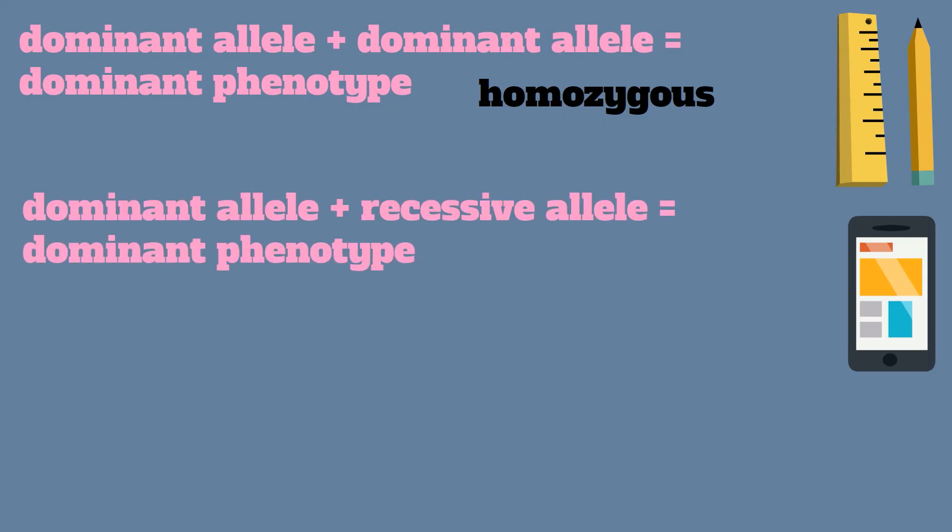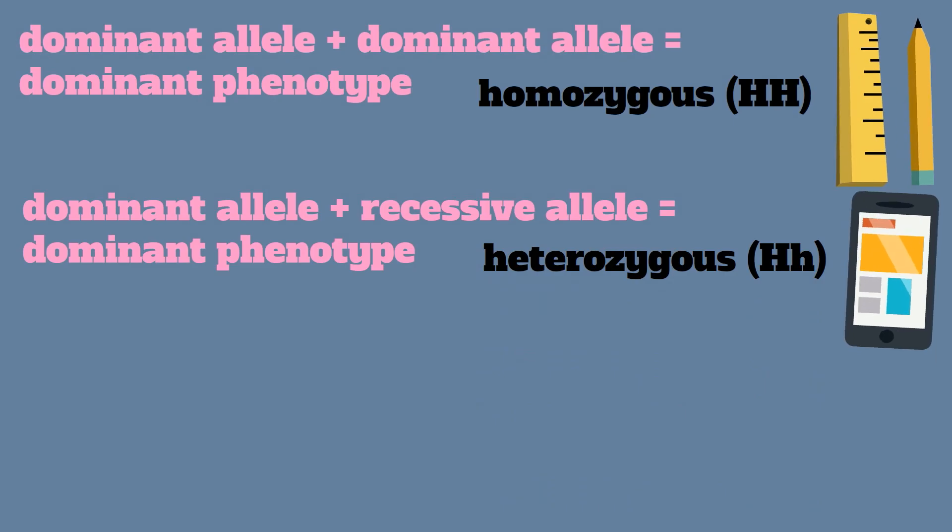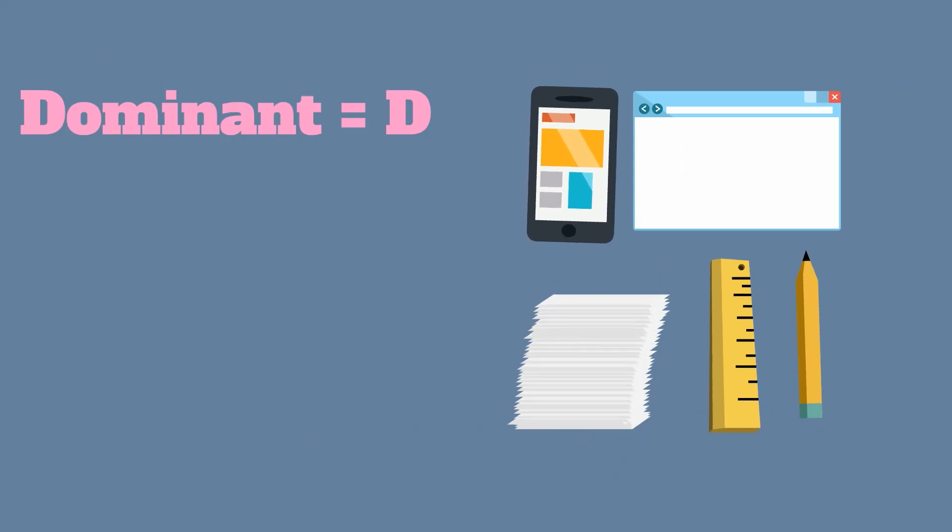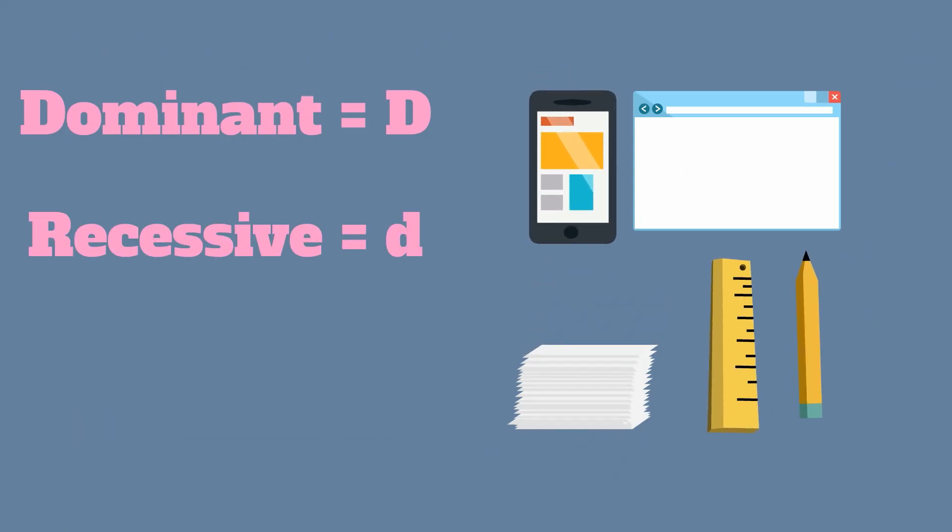A dominant allele plus a recessive allele equals a dominant phenotype, and this would be heterozygous because you have two different alleles. A recessive plus a recessive allele equals a recessive phenotype, and that would be homozygous. A dominant trait is always written with a capital letter. A recessive trait is written with a lowercase.